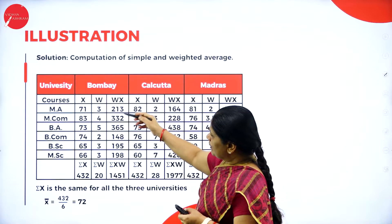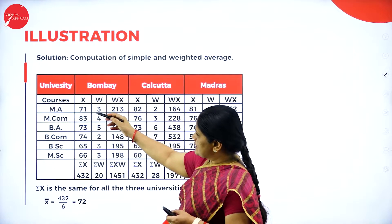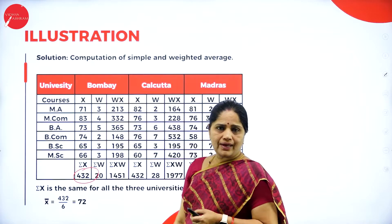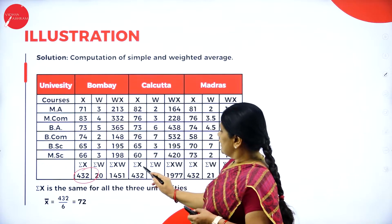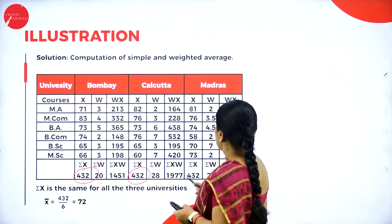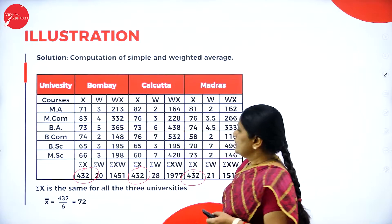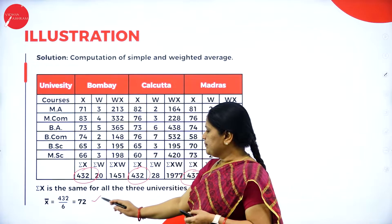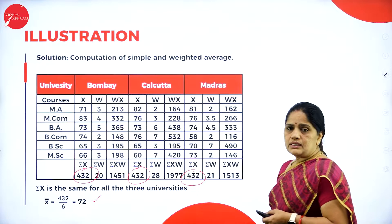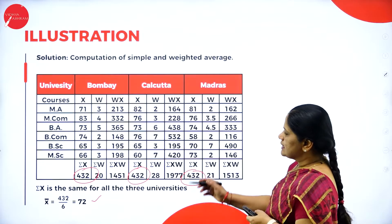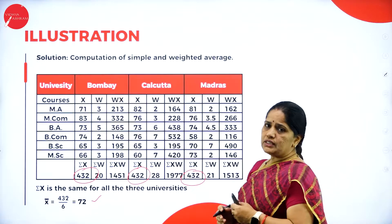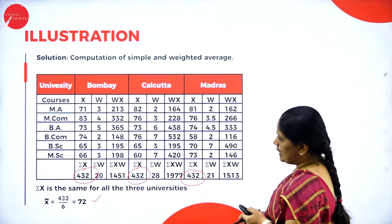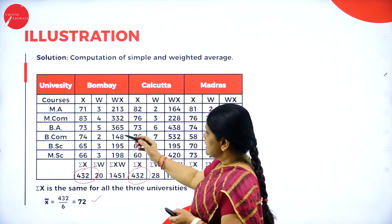When we compute the simple average, we take into consideration only the total of the x values. For Bombay, Calcutta, and Madras, the total is the same for all three, and the mean becomes the same — 72. So 72 percent of students pass in all three universities.